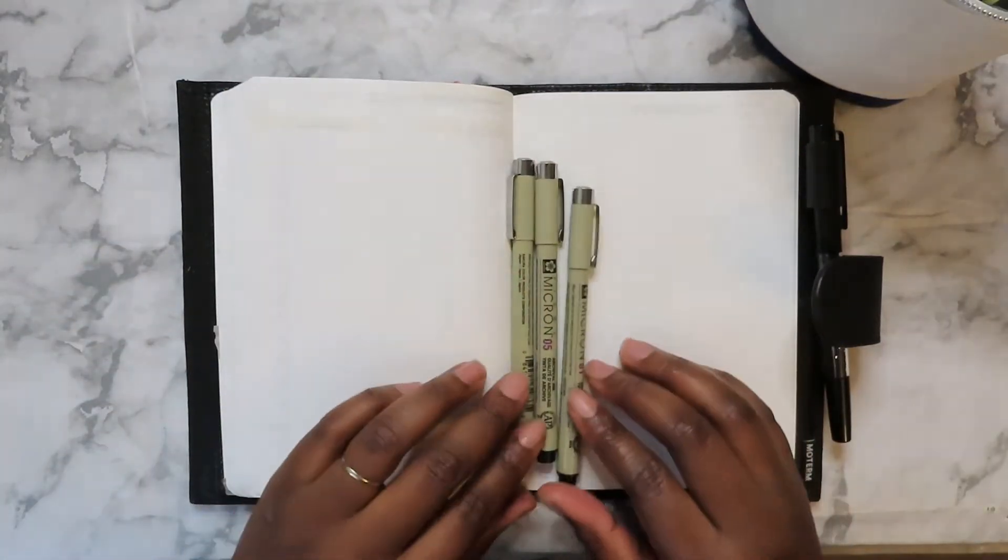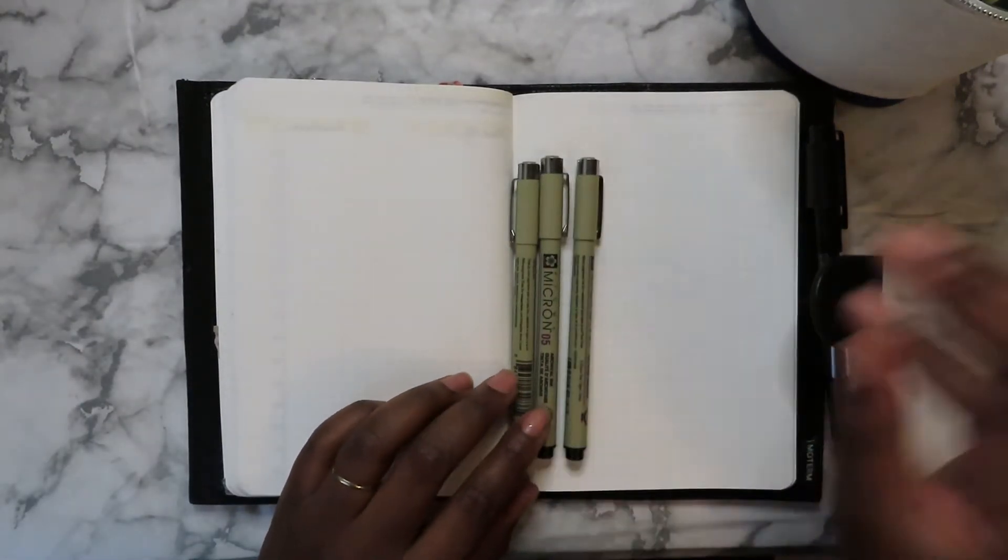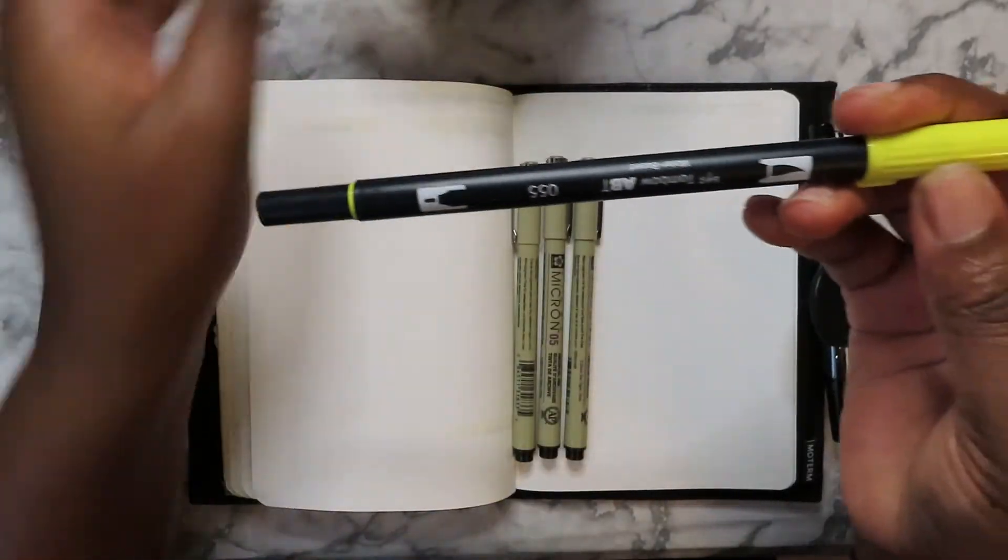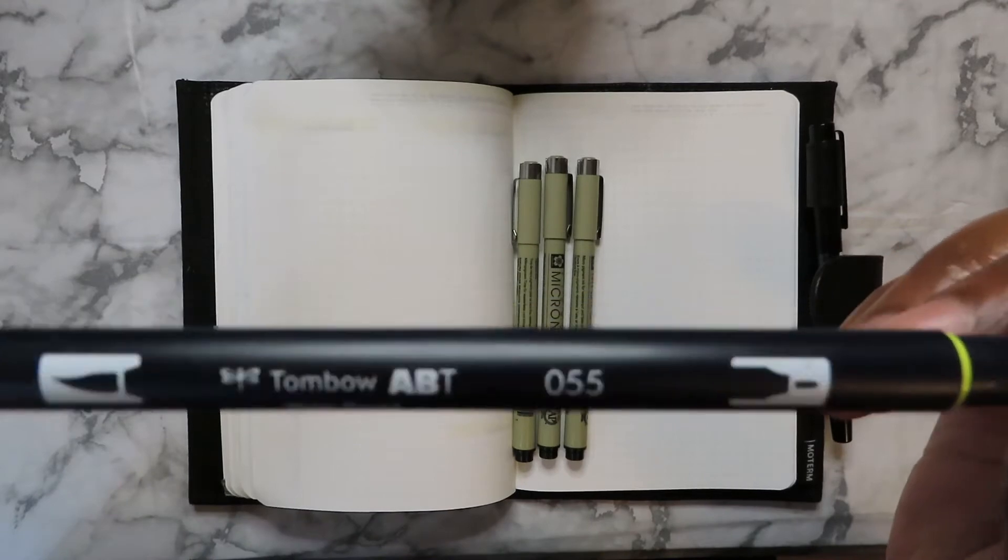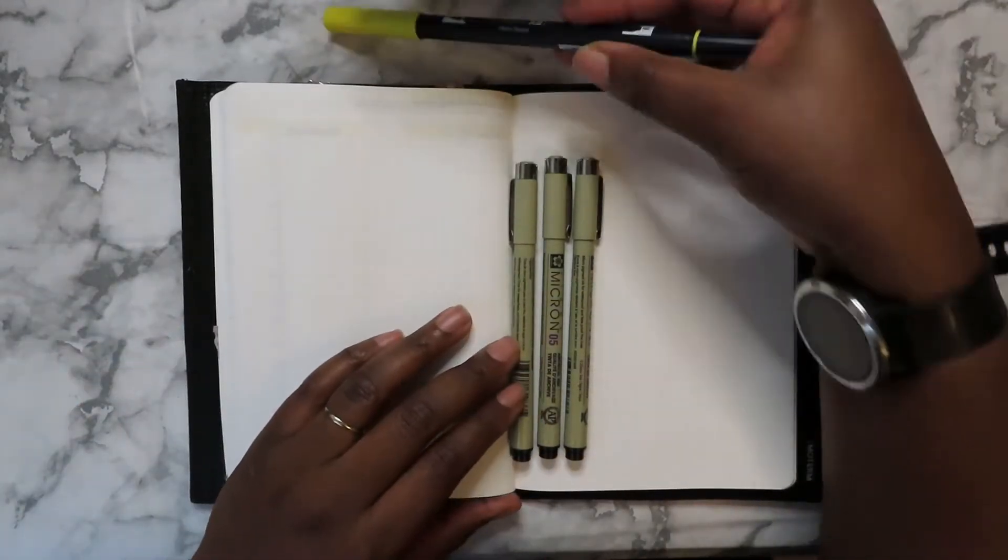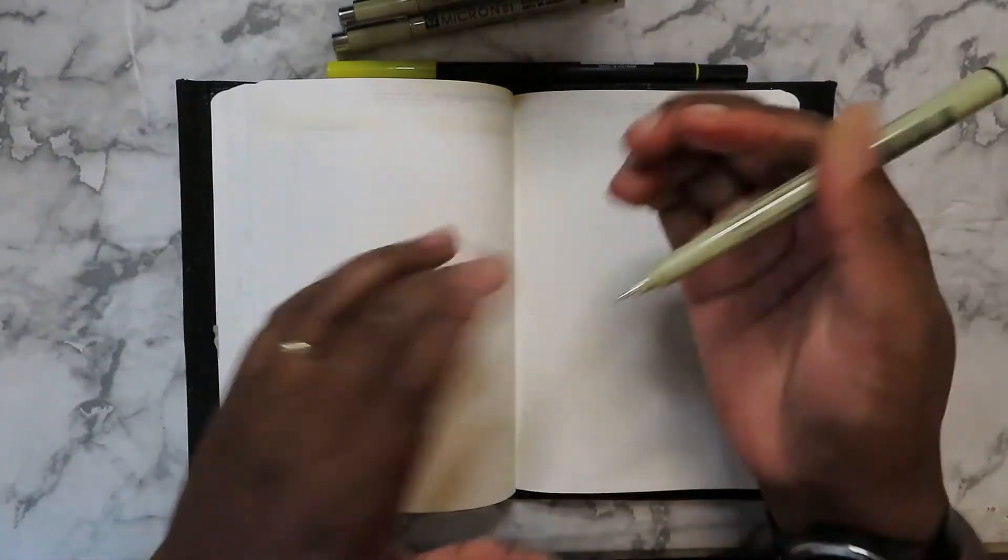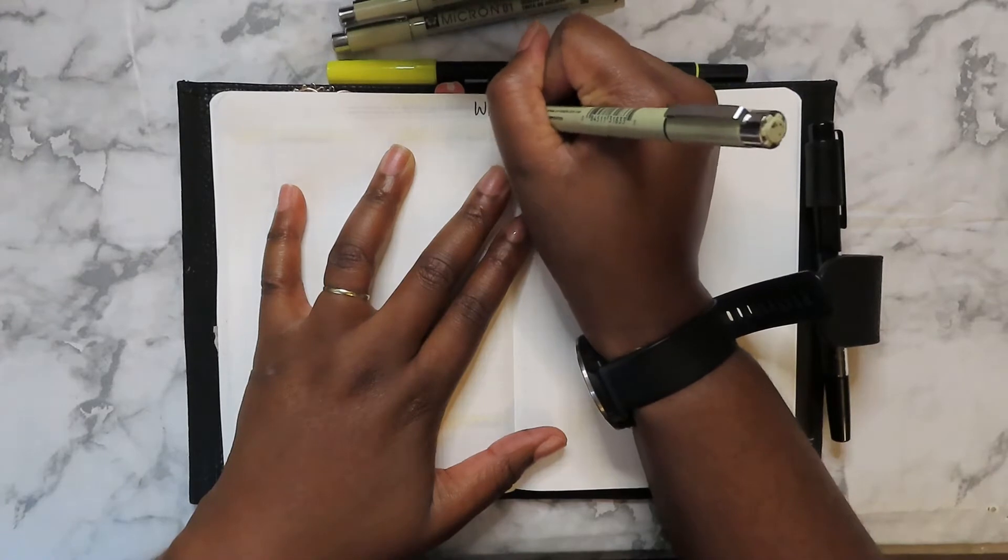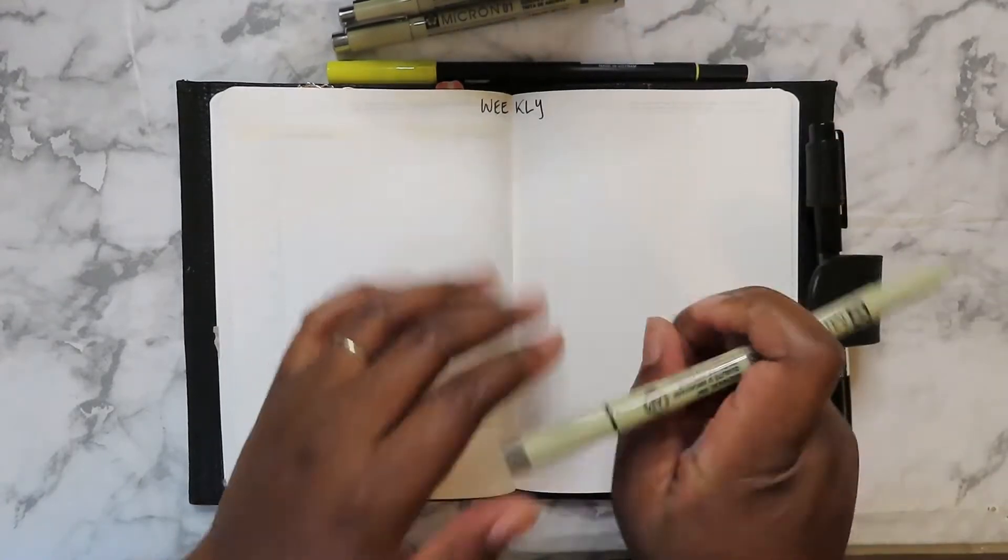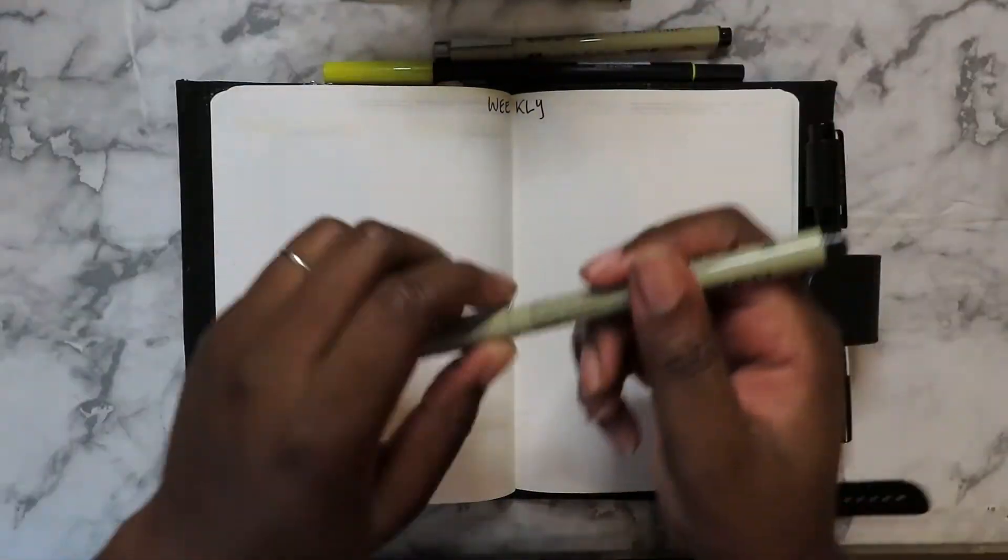We're going to be using my Pigma Microns in 01, 05, and 08. I'll be using my Mildliners as always, and I'll be using my Tombow brush pen in a 0.055. So let's begin. How's everyone doing today? I am doing pretty well.